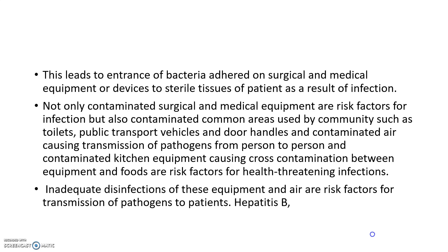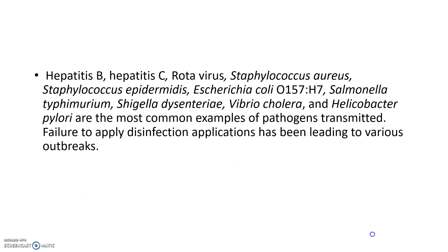Contaminated kitchen equipment causing cross-contamination between equipment and foods are risk factors for health-threatening infections. Inadequate disinfection of equipment and air are risk factors for the transmission of pathogens. The most common examples of pathogens transmitted include Hepatitis B, Hepatitis C, Rotavirus, Staphylococcus aureus, Staphylococcus epidermidis, E. coli O157:H7, Salmonella typhimurium, Shigella dysenteriae, Vibrio cholerae, and Helicobacter pylori.